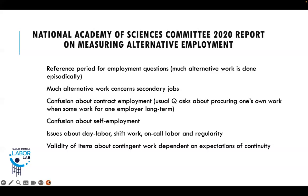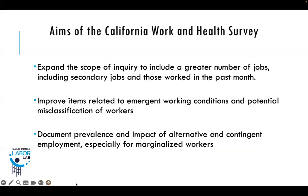The aims of the California Work and Health Survey were threefold: to expand the scope of inquiry about the labor market to include a greater number of jobs, including secondary jobs and those worked in the month prior to interview as well as the week prior; to improve items related to emergent work conditions and potential misclassification of workers; and to document the prevalence and impact of alternative and contingent employment, especially for marginalized workers.